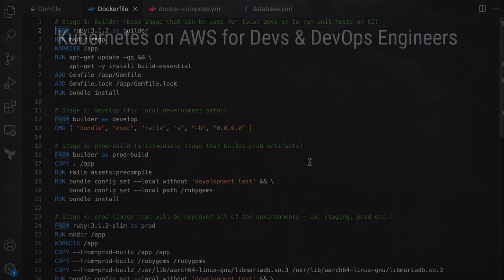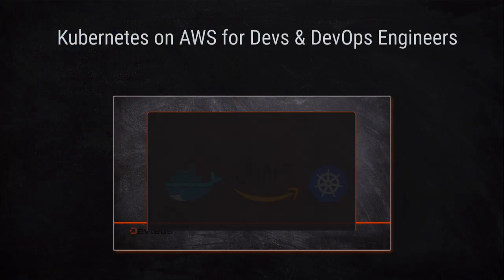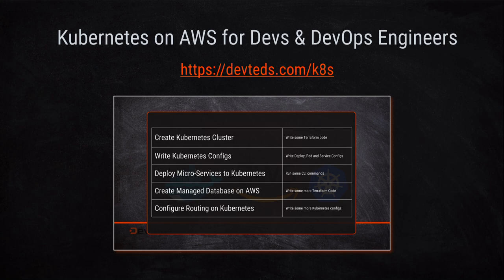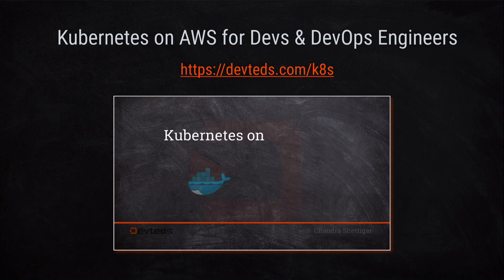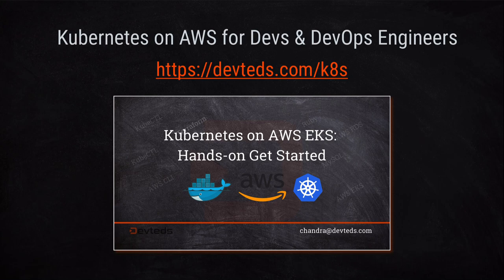One quick announcement before we start. If you're interested in getting started with Kubernetes on AWS and learning to create a Kubernetes cluster on AWS EKS and deploy microservices or different kinds of applications, please check out this Kubernetes course. I'll leave a link in the description for your reference.